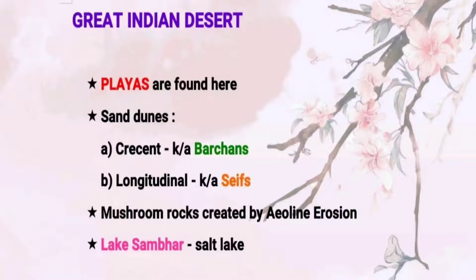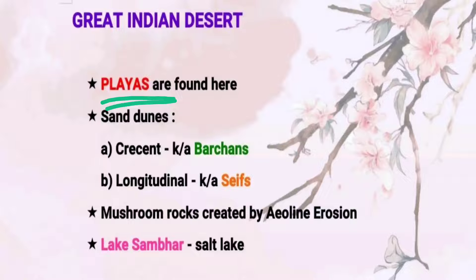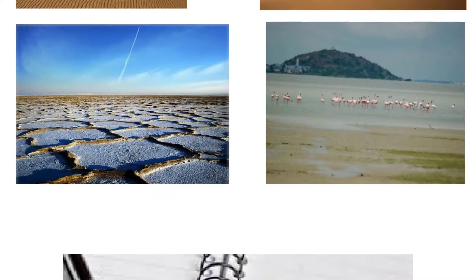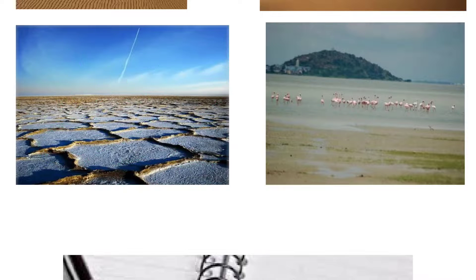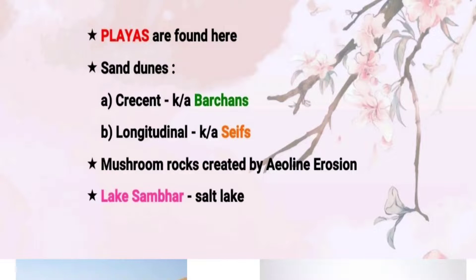In the Great Indian Desert you can also find playas. Playas are simply the flat salt pans found on the surface after evaporation. The salts are found in the form of compactly packed layers. As you can see in the diagram, this represents a playa — these are the salt pans left after the evaporation of water.